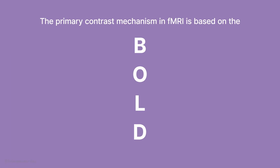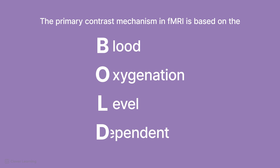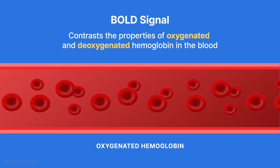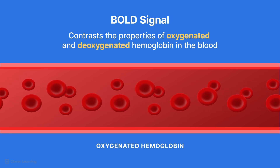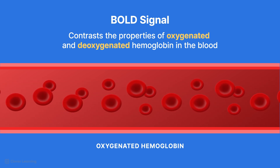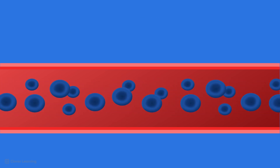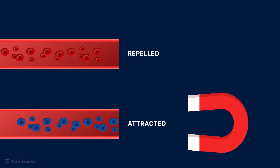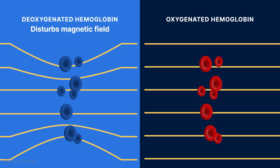The primary contrast mechanism in fMRI is based on the blood oxygenation level dependent, or BOLD, signal. This signal contrasts the properties of oxygenated and deoxygenated hemoglobin in the blood. Blood carries oxygenated hemoglobin throughout the body to provide oxygen to different organs and tissues. Once the hemoglobin has released its oxygen, it is called deoxygenated. Oxygenated hemoglobin is diamagnetic, meaning it is slightly repelled by the magnetic field and does not disturb it, while deoxygenated hemoglobin is paramagnetic, meaning it is attracted to the magnetic field. Deoxygenated hemoglobin disturbs the magnetic field more than oxygenated hemoglobin, causing a decrease in signal intensity in areas with a high amount of deoxygenated hemoglobin.